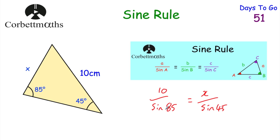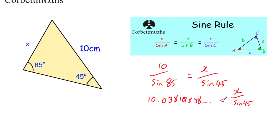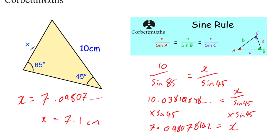So we've got the sine rule: 10 over sin 85 equals x over sin 45. We just need to solve this equation. 10 divided by sin 85 equals 10.03819838. That equals x divided by sin 45 degrees. We want x on its own, so we multiply both sides by sin 45. Multiplying 10.038... by sin 45 gives us 7.098078142. On the right-hand side, x divided by sin 45, multiplied by sin 45 leaves us just x. So x equals 7.09807..., which rounds to 7.1 centimetres to one decimal place. We've found the length of that side using the sine rule.